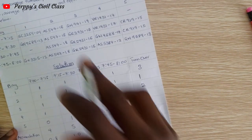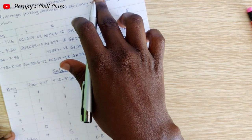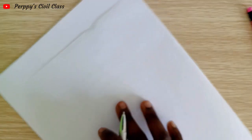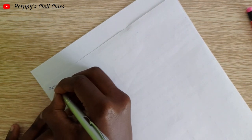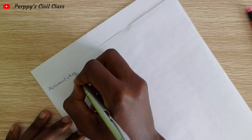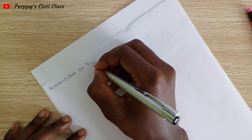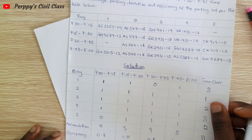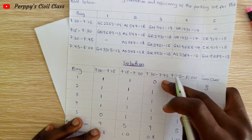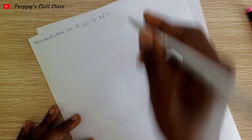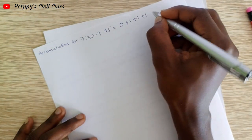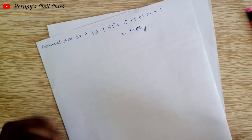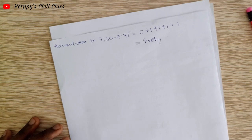Next, we calculate the accumulation for the time interval 7:30 to 7:45. For that interval, B1 has 0 cars, and B2, B3, B4, B5 each have 1 car. So accumulation = 0+1+1+1+1 = 4. Four vehicles were parked within the time interval 7:30 to 7:45.